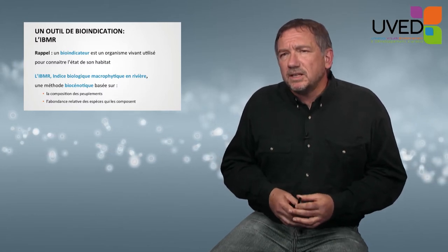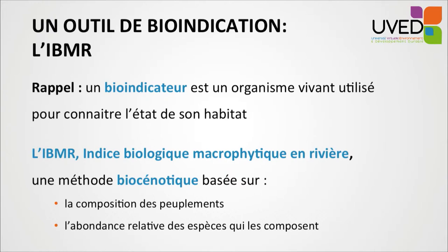Bioindication tools — what is a bioindicator? A bioindicator is an organism, part of an organism, or a group of organisms which can be used to describe the status of the environment it lives in. For macrophytic indicators in rivers, an indicator was developed in the 1990s: the IBMR — the Biological Macrophyte Index for Rivers — based on two main aspects: the composition of the vegetation, which species are present, and the relative abundance of the species composing the vegetation.